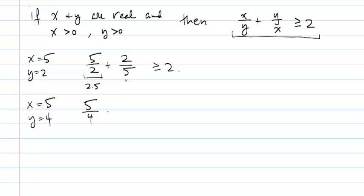So I get 5 over 4 plus 4 over 5 on the left-hand side. And if I compute the value of these two fractions, I get 1.25 and 0.8. Now, the sum of these two values is in fact at least 2.